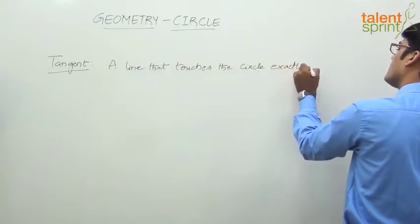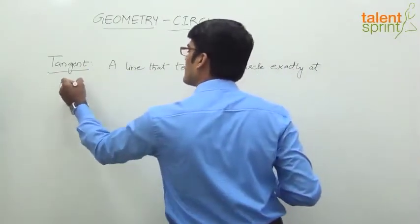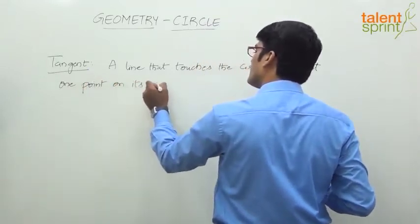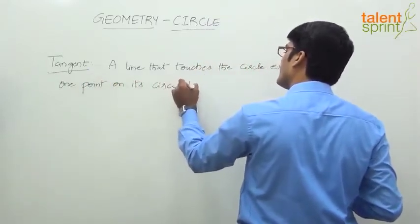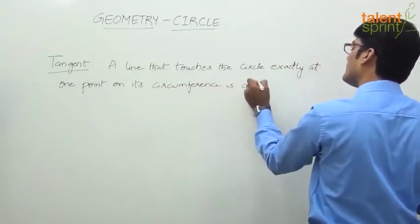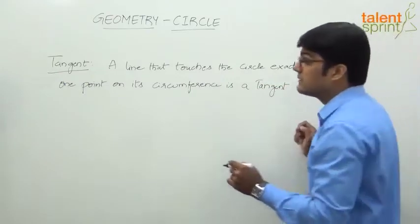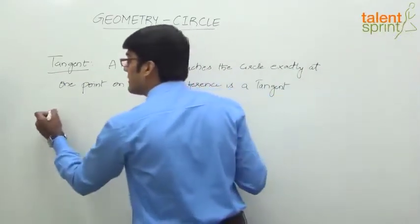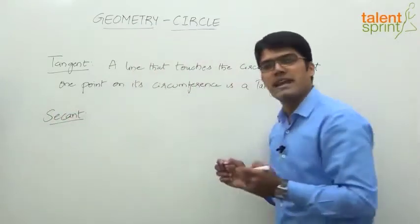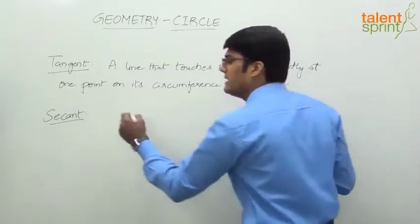A tangent is a line that touches the circle exactly at one point. Then there is something called a secant. Let us also look at what a secant is, because there is some property of tangent correlated with secant. A secant is a line that cuts the circle at two points.